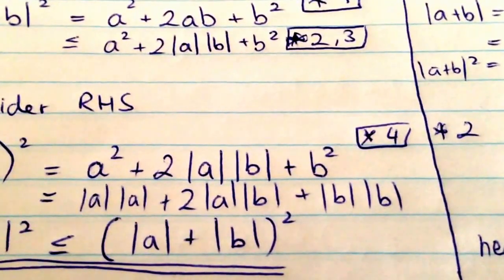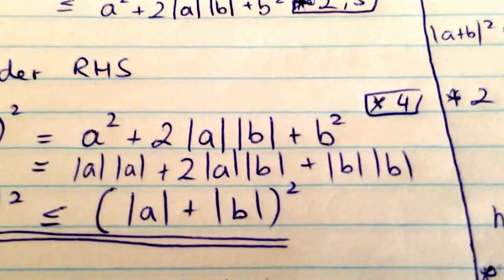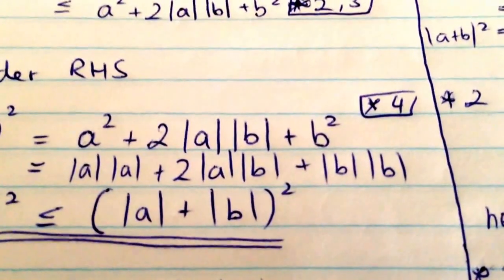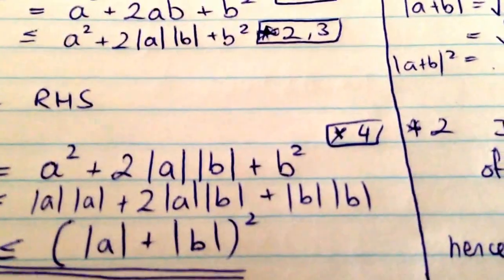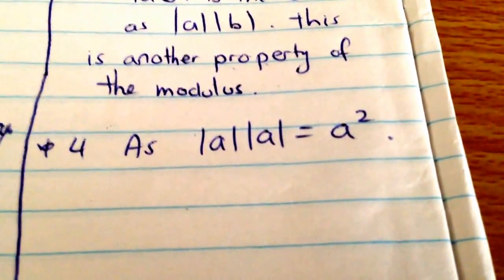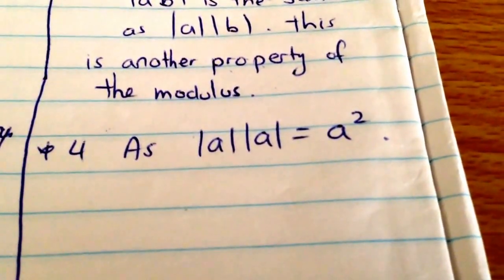And you're probably wondering, where's a squared and b squared coming from? Well, again, we can say that this is equal to mod a mod a plus 2 mod a mod b plus mod b mod b. But again, as you can see with the little asterisk 4, we've got another property we can use to make it simple. And as we can see, the mod of a multiplied by the mod of a is just going to be a squared. So let's keep it nice and simple there.